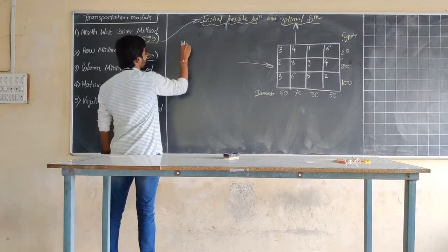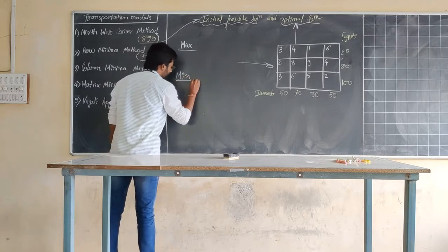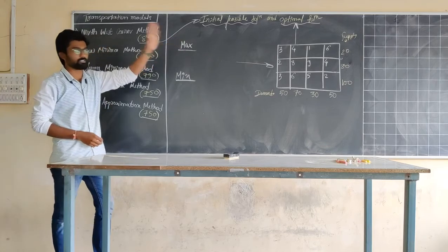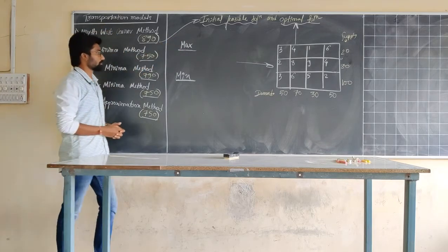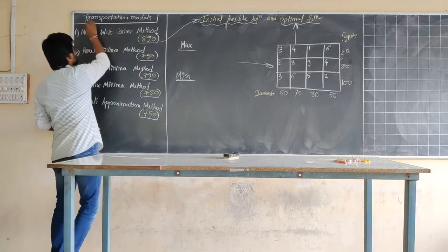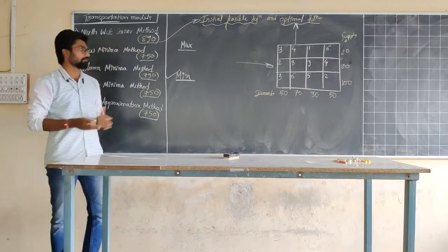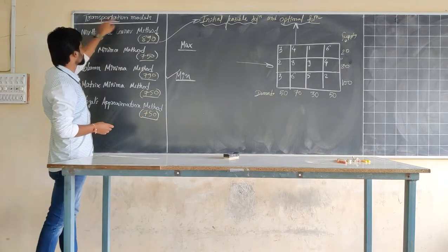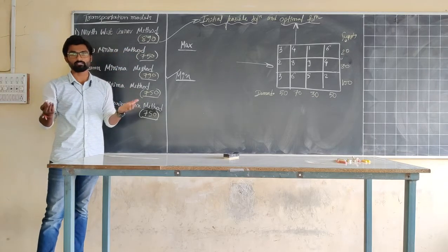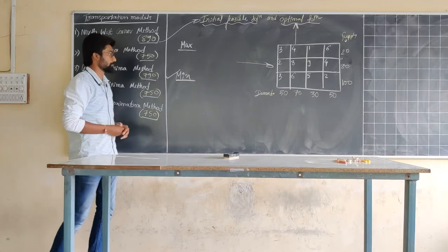When we talk about optimality, there are two ways to reach it: one is maximization and another is minimization. For transportation models, our aim is to go for minimization — meaning we have to reduce or minimize the transportation cost. As we reduce the transportation cost, that leads to an increase in profits. That is why our aim here is minimization.